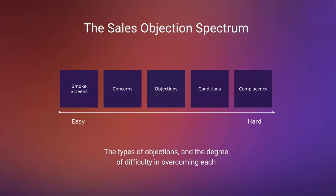Today we're going to talk about a few different types of objections and walk through a step-by-step framework for handling objections and how that framework changes for each type. There are really five types of objections that are surfaced in a typical B2B deal, and this is the sales objection spectrum.